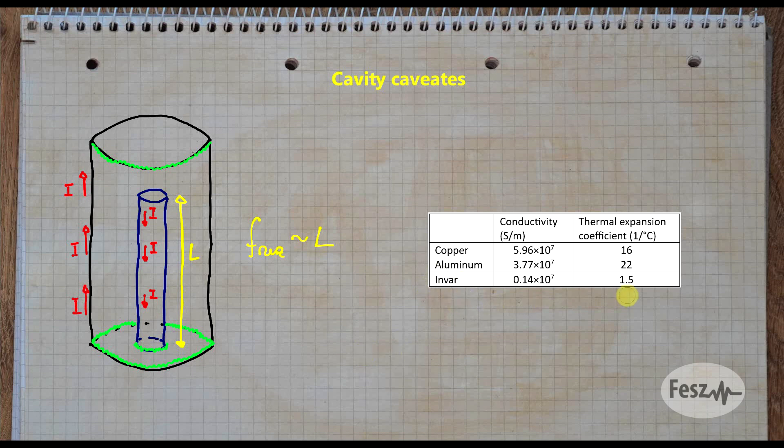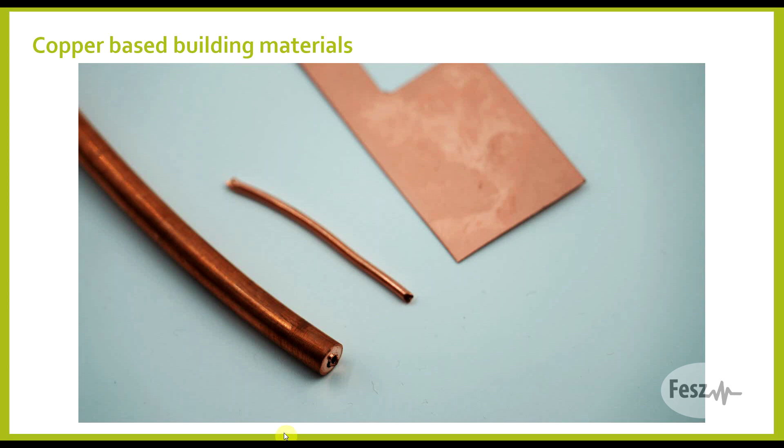You can either take this into account and just make a wider bandwidth filter, or use special materials with low thermal expansion coefficients. Here, a material called Invar stands out, since this has a far lower thermal expansion coefficient compared to copper and aluminum. And even if its conductivity isn't all that great, it's still a widely used material in the construction of resonant cavity filters. For my builds, however, I would be using copper in the shape of either wire, tubes or pipes, and pieces of PCB. It might not be an ideal solution, but it's easy to work with and quite easily available. Also, since it can be soldered together, it makes the construction quite painless.